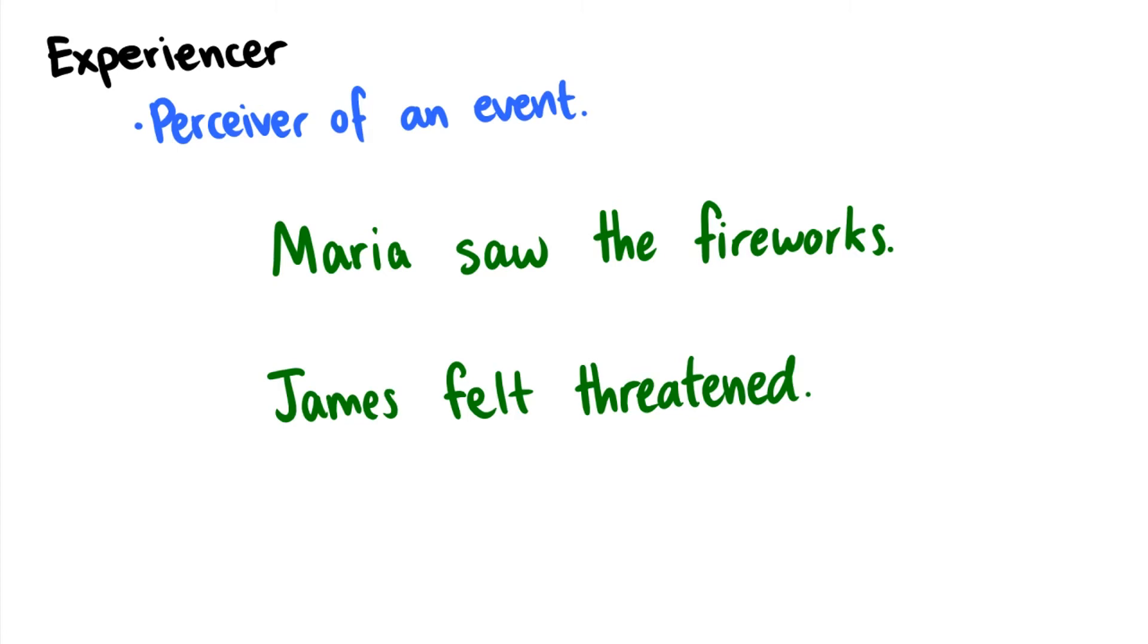An experiencer is someone who perceives an event. For instance, in the sentence Maria saw the fireworks, Maria here is an experiencer. She is someone who is seeing the fireworks. She's not an agent because the act of seeing, like laying down and seeing, when you say Mary saw the fireworks, you don't make that active motion of looking towards it. You just passively take in the environment. You're experiencing the fireworks.